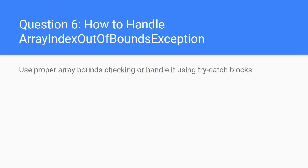Question 6: how to handle ArrayIndexOutOfBoundsException? Use proper bounds checking or handle it using try-catch. When accessing an array, check whether it might throw an exception, or check the size first to avoid it. If the index you want to access is beyond the array size, write an if-condition check. If you don't know the size, add a catch block that catches ArrayIndexOutOfBoundsException.